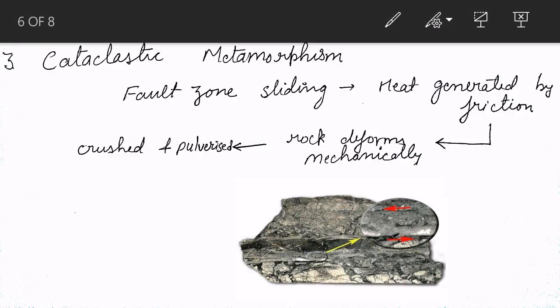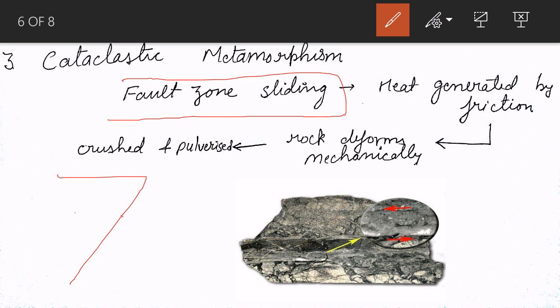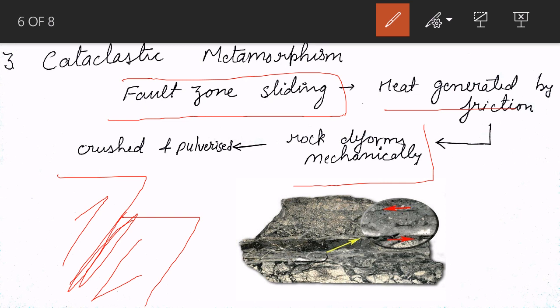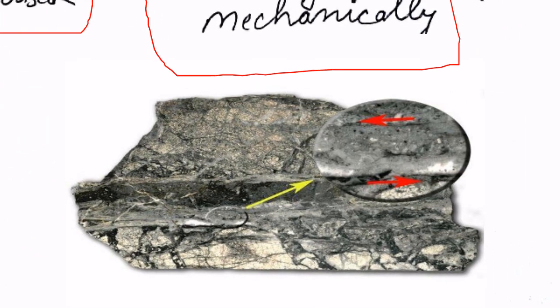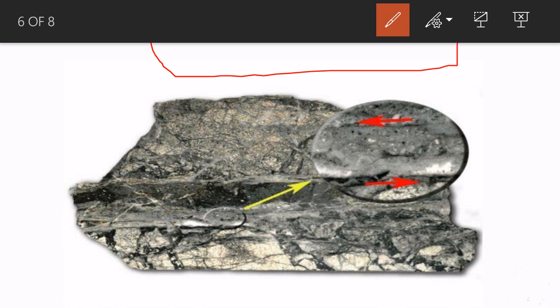Next is cataclastic metamorphism. This is a rare kind of metamorphism restricted to fault zones. Where sliding occurs along a fault, rocks passing each other get mechanically deformed, crushed, and pulverized. Heat is generated from friction. This change in texture and properties results in cataclastic metamorphism. In the example shown, you can see the cataclastically deformed zone where rocks slid past one another.